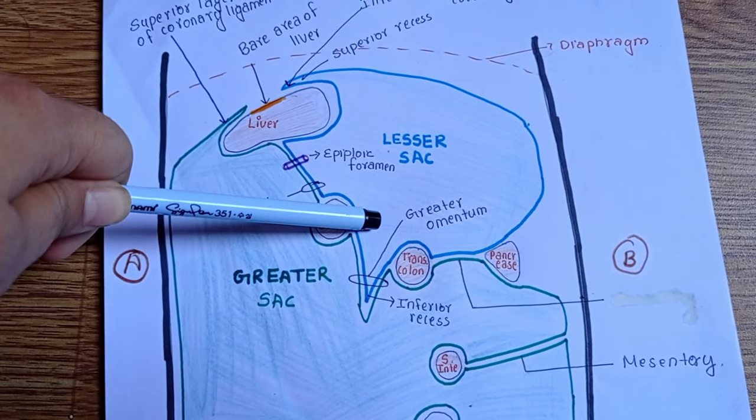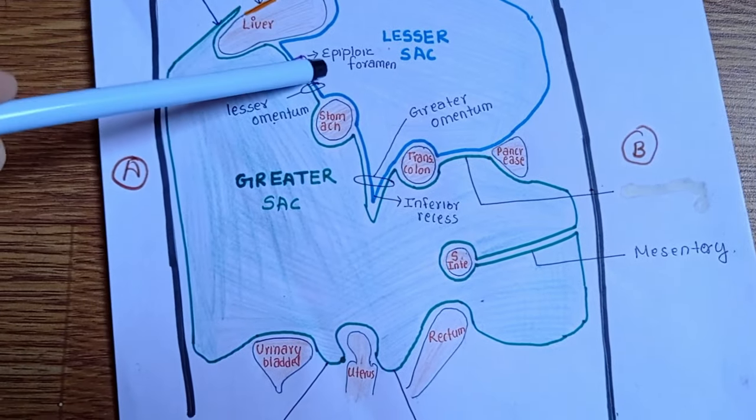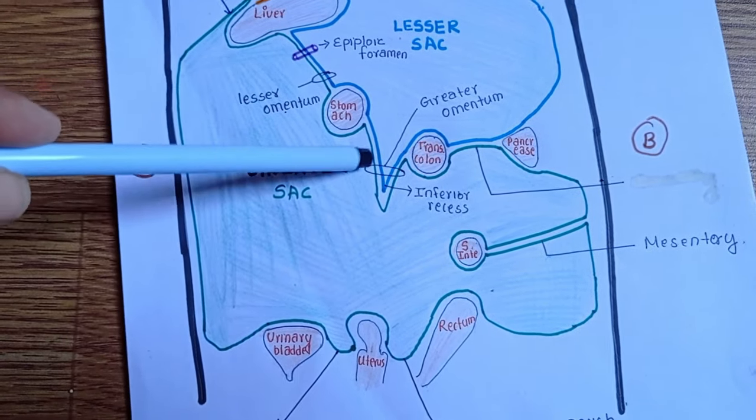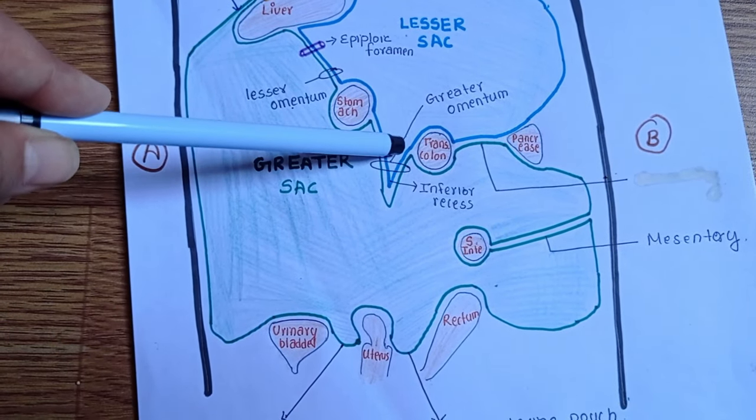We have lesser omentum and greater omentum here. This one is our lesser omentum and this one right here is our greater omentum. There are four layers in the greater omentum.